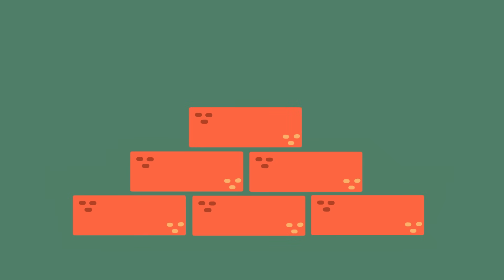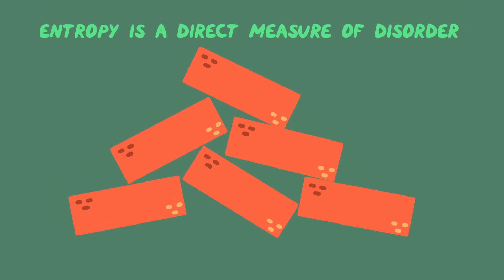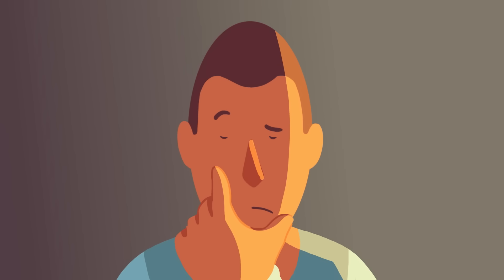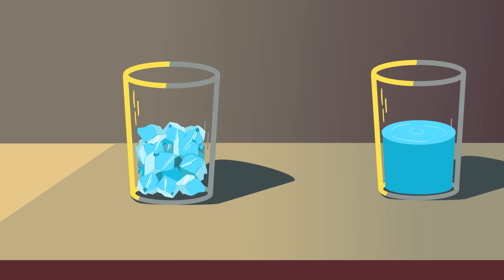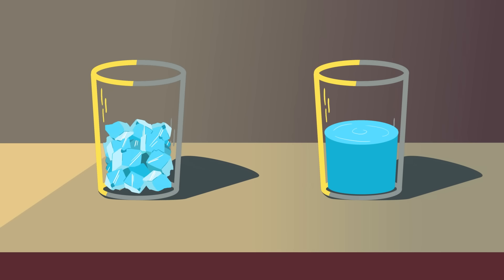Entropy is often described as a measurement of disorder. That's a convenient image, but it's unfortunately misleading. For example, which is more disordered? A cup of crushed ice, or a glass of room temperature water? Most people would say the ice, but that actually has lower entropy.